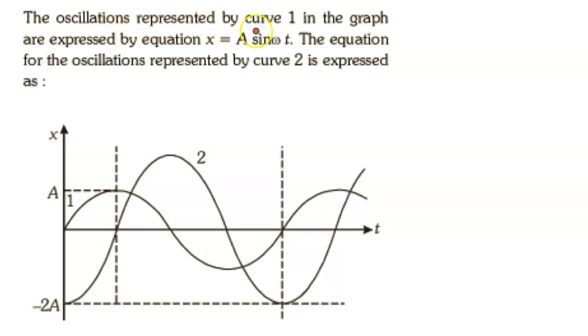The oscillation represented by curve 1 in the graph is expressed by equation x = A sin ωt. The equation of oscillation represented by curve 2 is expressed as...